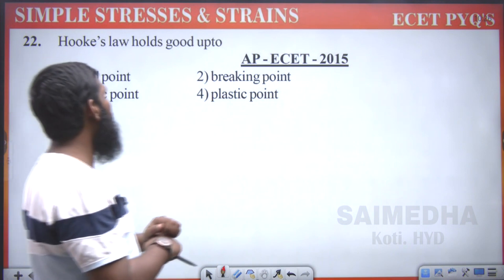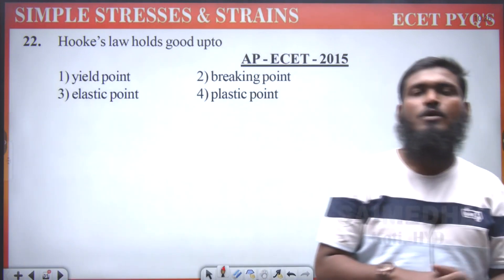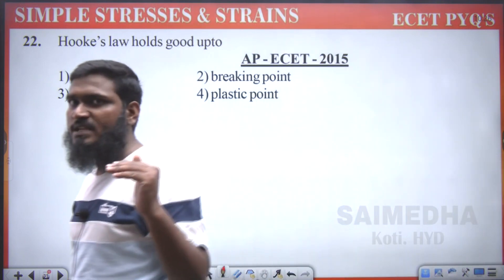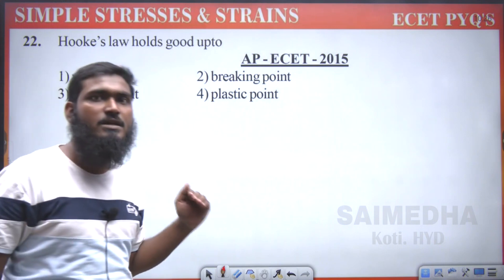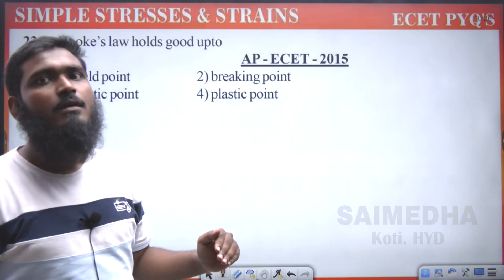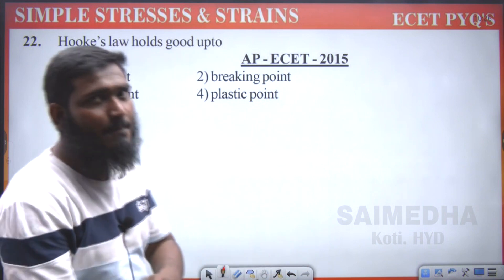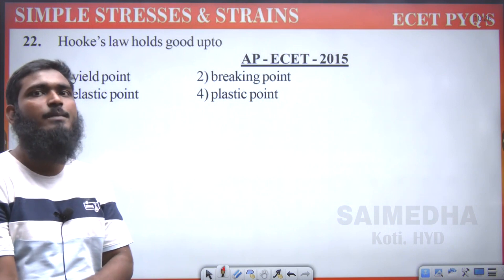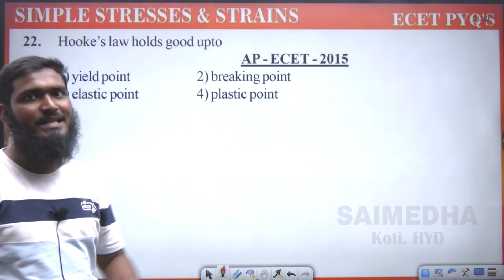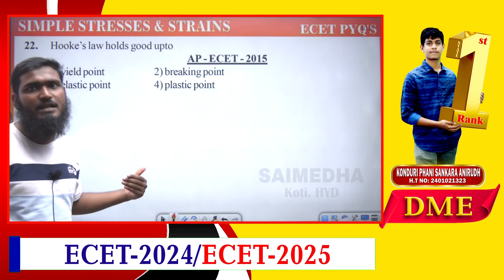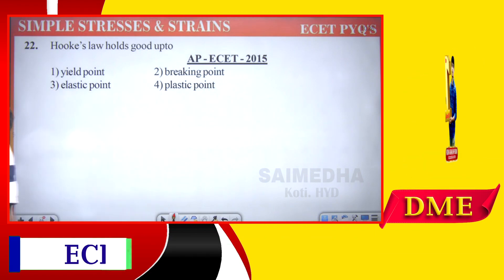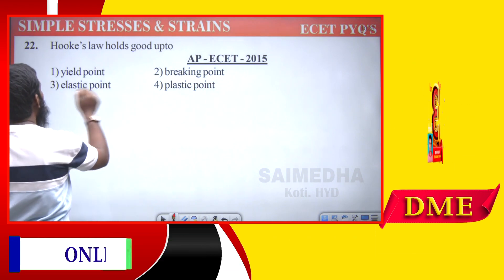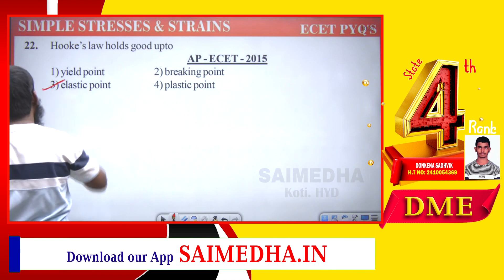Hooke's law holds good up to — already discussed. If proportional limit is given, we go with that option. If proportional limit is not given, then we can go for elastic limit. Within the elastic limit, stress is directly proportional to strain. Since proportional limit is not given here, Hooke's law holds good up to the elastic point.